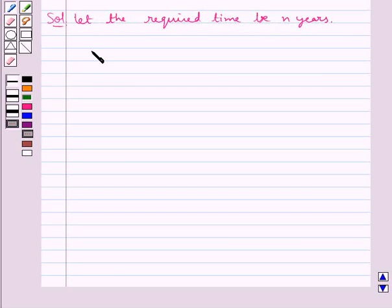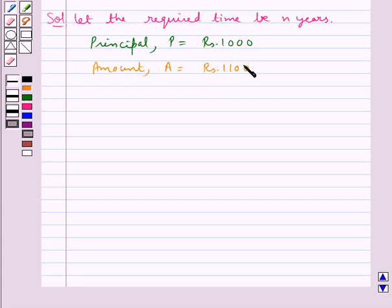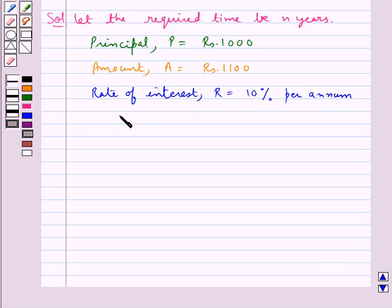We are given the principal P equal to rupees 1000, amount A equal to rupees 1100, rate of interest R equal to 10% per annum compounded annually, and we need to find the time, that is N.